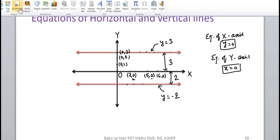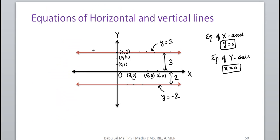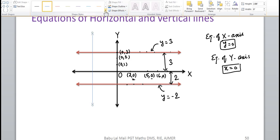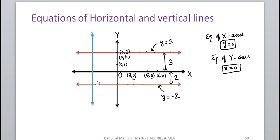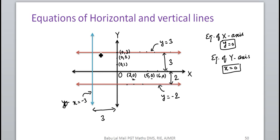If I take a line which is parallel to the y-axis, and suppose this line is at a distance of 3 units to the left of the y-axis, then this line's equation is x = −3. Why? Because if we have any point on this line, its x-coordinate is equal to −3, for example the coordinate (−3, 0).